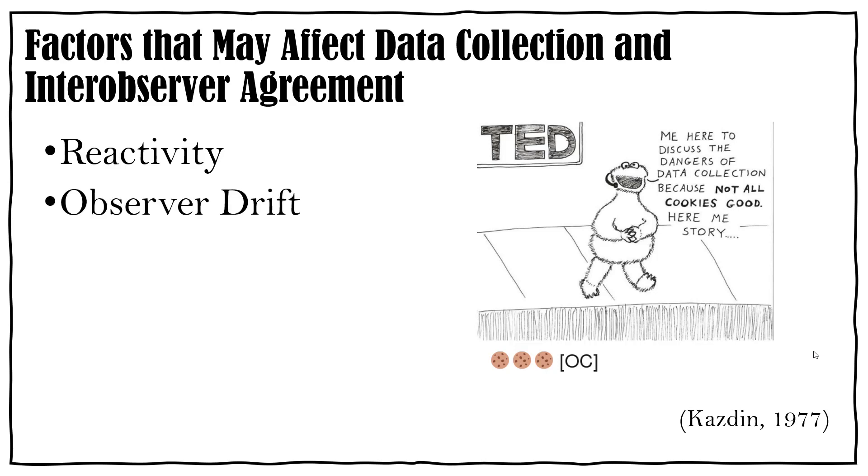Observer drift as well. So sometimes we can get a little lazy or a little lenient on what we record as a behavior. So we can get a little lenient on our behavioral definition. So going back through and doing some training, reminding ourselves of what the actual behavior is, is important.